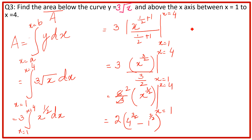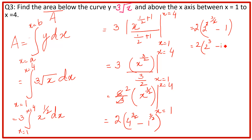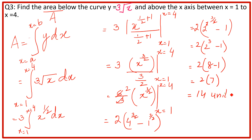यहाँ 4 को हम 2² लिख सकते हैं, और इसकी power 3/2 है — तो (2²)^(3/2) = 2³। 1 की जो भी power हो, वो 1 के equal होती है। यह 2 इस 2 से cancel हो गया — हमारे पास रहा 2³ − 1 = 8 − 1 = 7। 2 × 7 = 14 unit²।